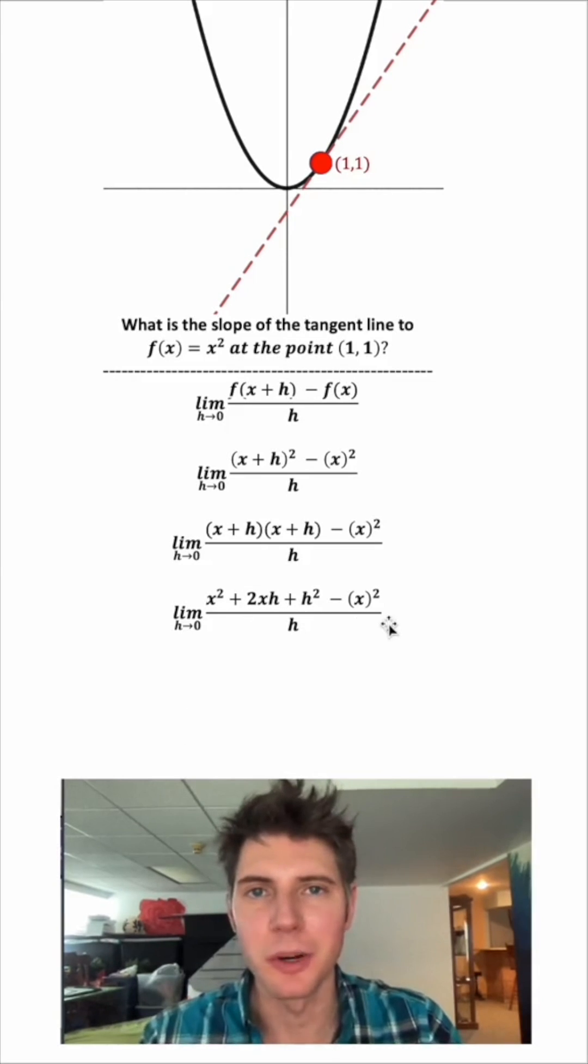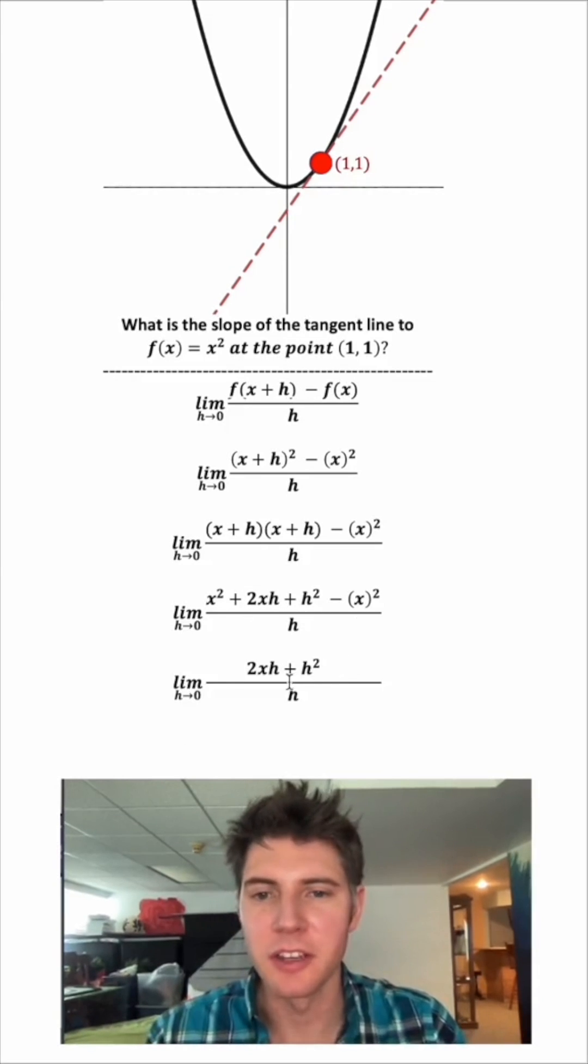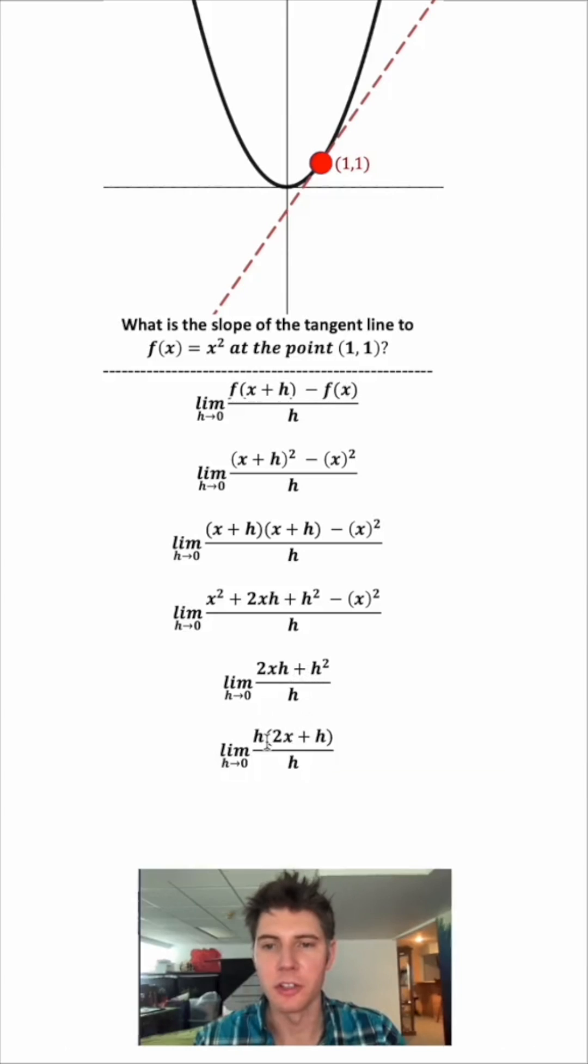This x squared and this negative x squared can cancel each other out. And we can clean this up. Now I'm going to factor an h out of the top so it'll look like this. We pull the h out. And to check this, h times 2x is 2xh. And h times h is h squared. These two h's will cancel, giving us just this here.